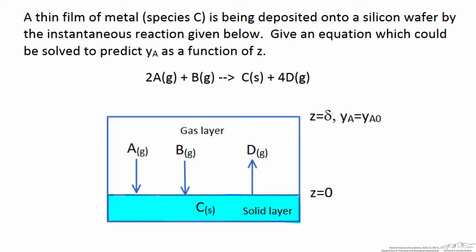Based on this we can see that since we have a flux of both A and B through the gas layer to the surface and a flux of D away from the surface, we are looking for an equation for the flux of A to give us our concentration of A. We are going to look at both the diffusive and convective terms to characterize this flux.